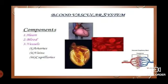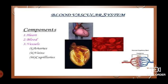The blood vascular system has these components. The first one is the heart, the second is the blood, and the third is the vessels. Vessels consist of three parts: arteries, veins, and capillaries.